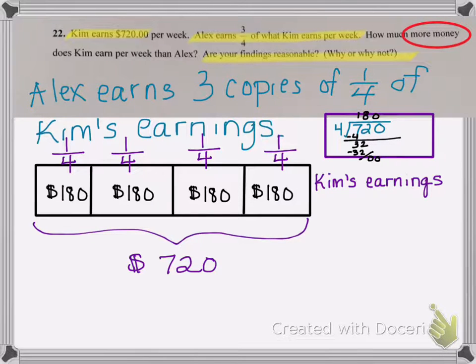Now Alex earns three copies of one-fourth of what she earns. So the shaded area represents what Alex earns. But notice this extra $180. That is the amount that Kim earns above and beyond what Alex earns.